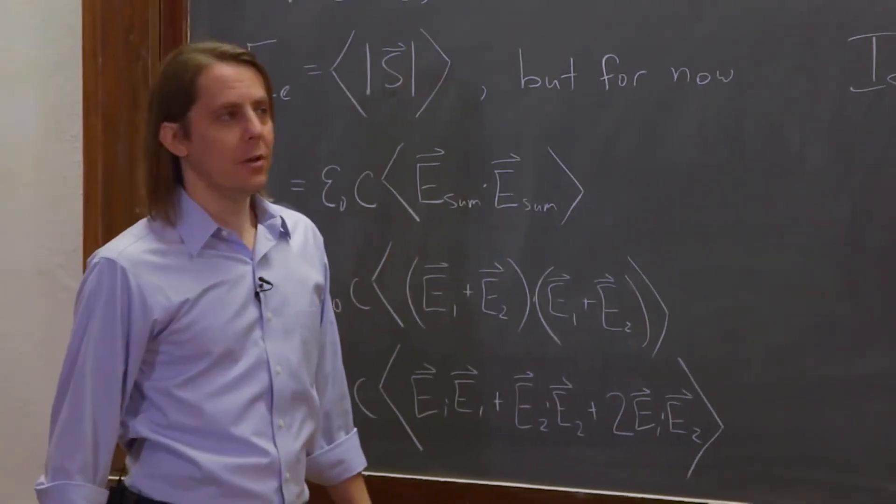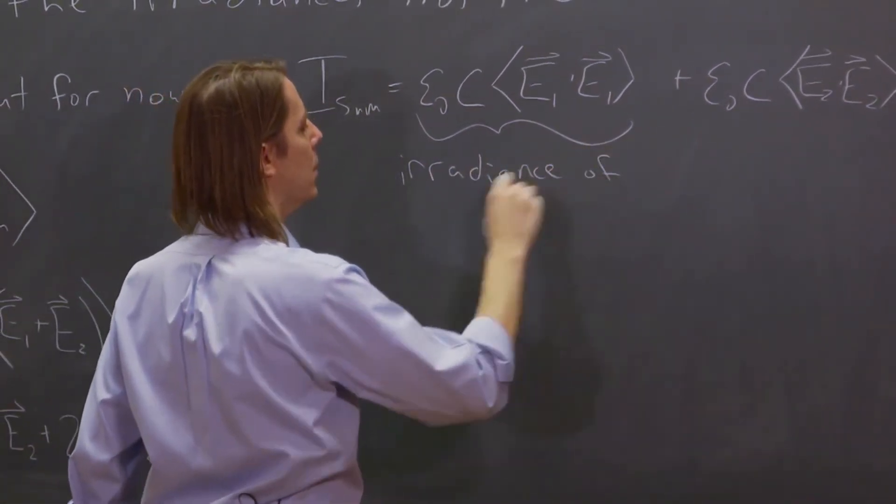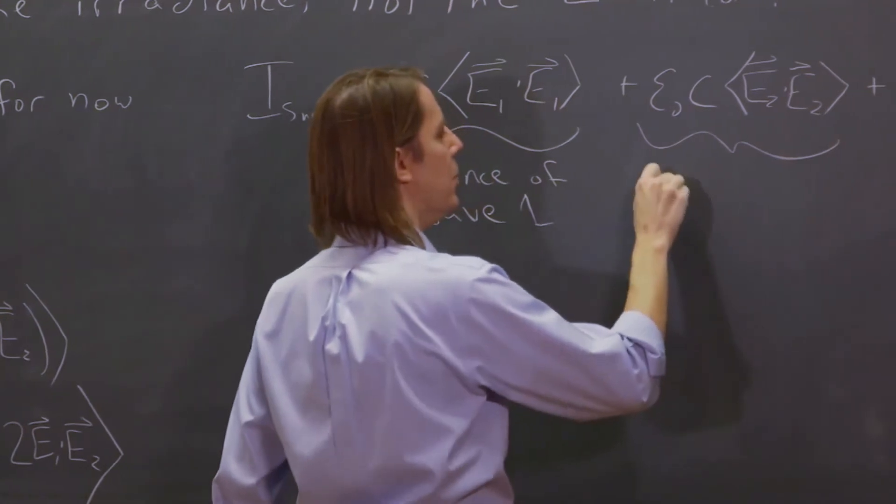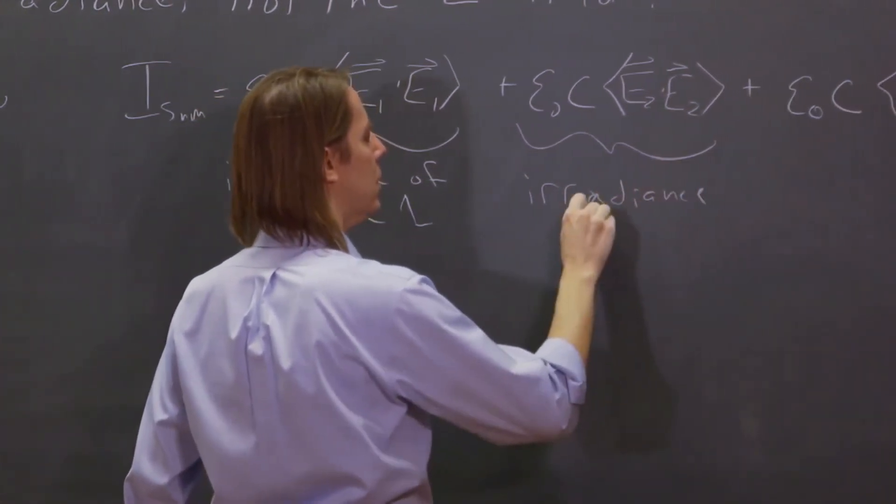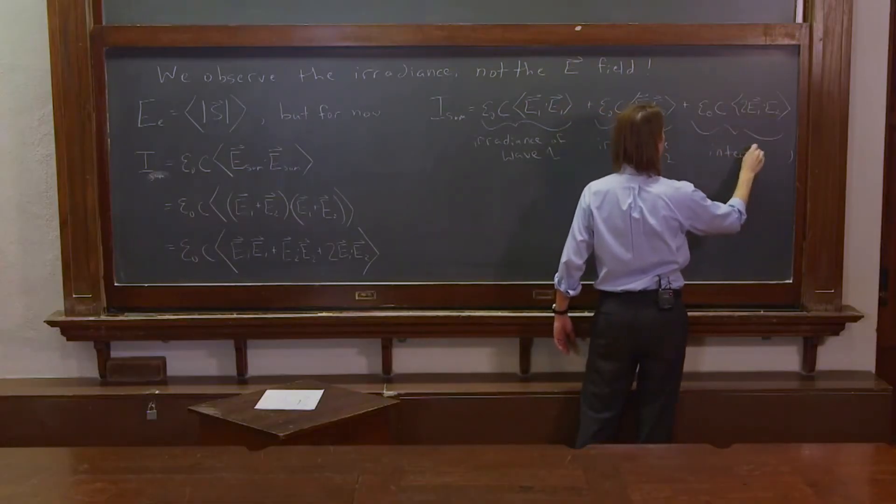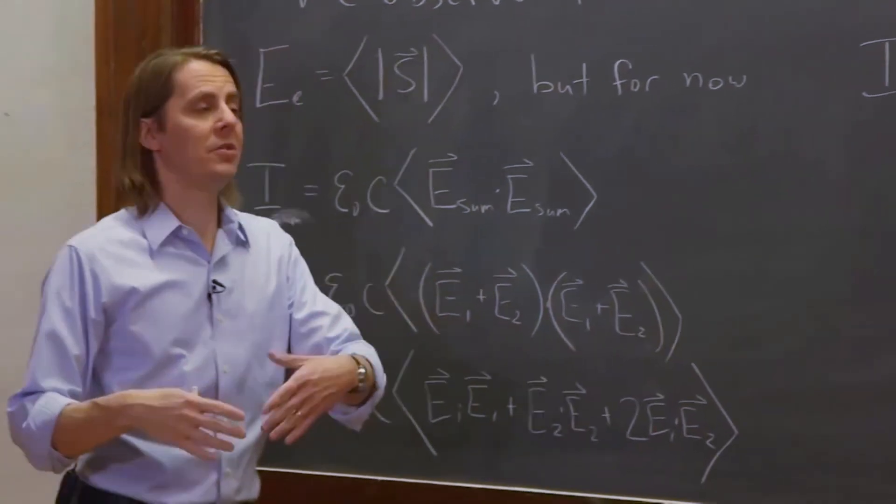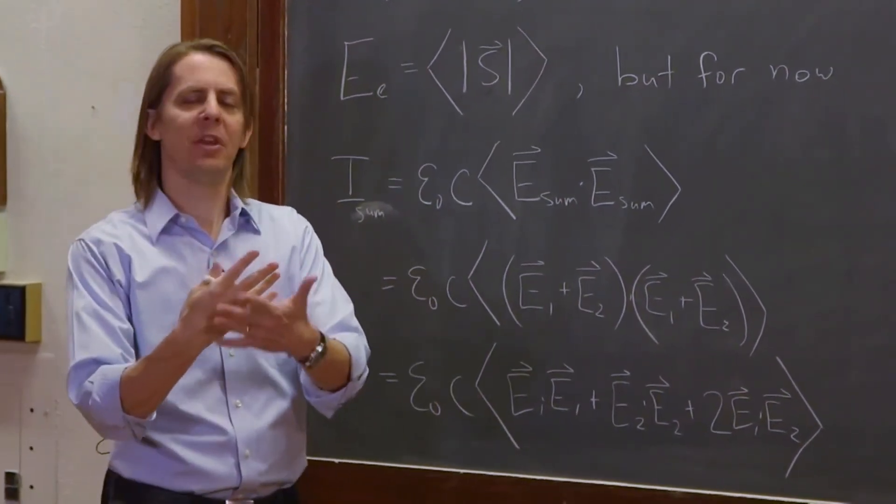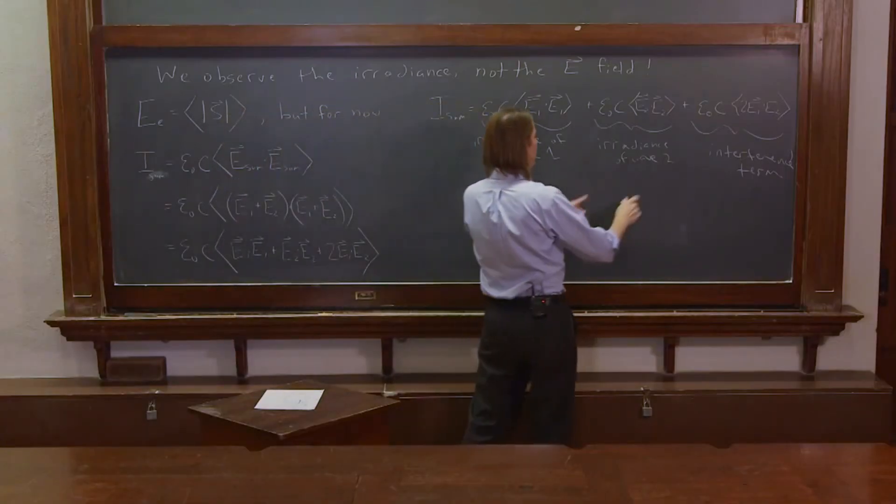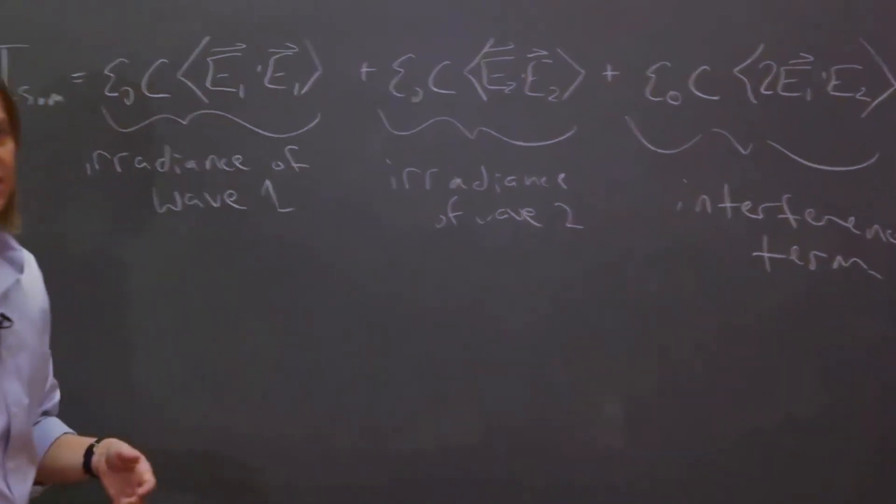And then you look at that and you say, oh, this is the irradiance of wave 1, and this is the irradiance of wave 2. And this is what we call the interference term. So if we have two plane waves and each of them has one watt per meter squared and they overlap, if you don't think about interference, you would say it must make two watts per meter squared. And that's what you would get if you just add these two. But the interference can make them cancel or add. And this is the term that gives you that interference.